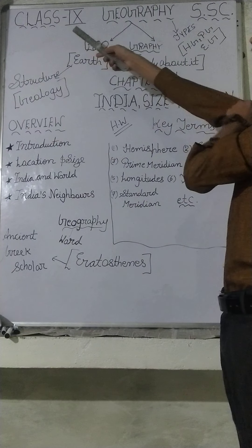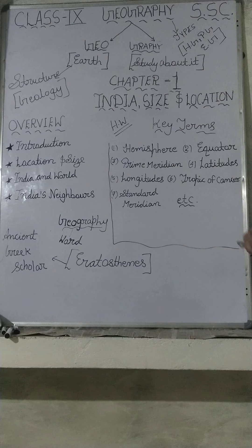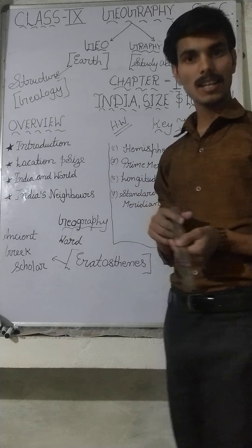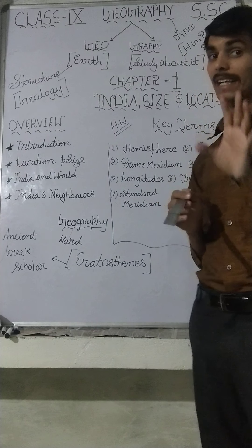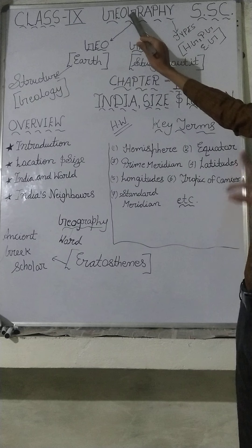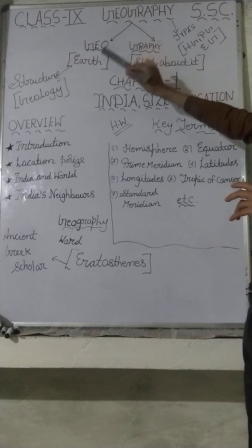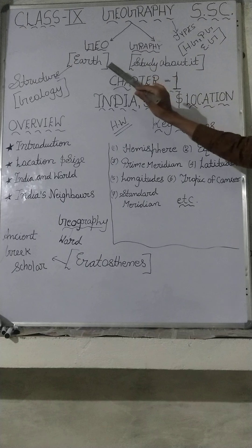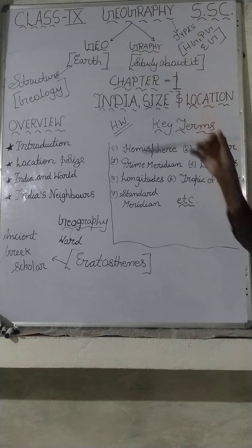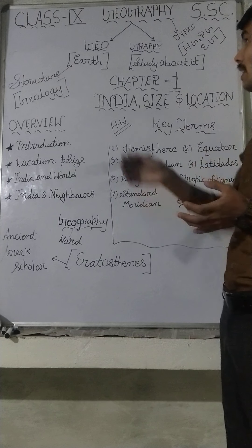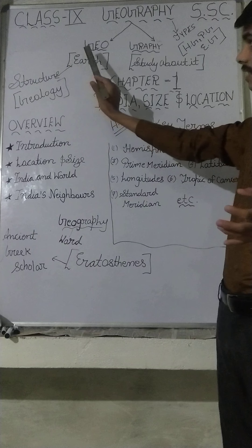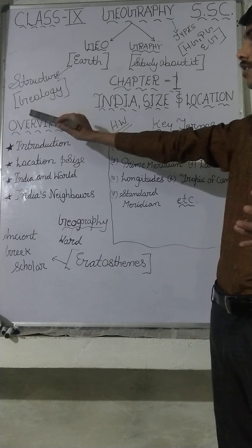This is our geography Class 9th SST class. Before starting our geography, let me tell you what is the exact meaning of geography. Geography is made up of two words: geo, that means earth, and graphy, that means study about it. So when we study about the earth, that is known as geography, and when we study the structure of earth, it is known as geology.